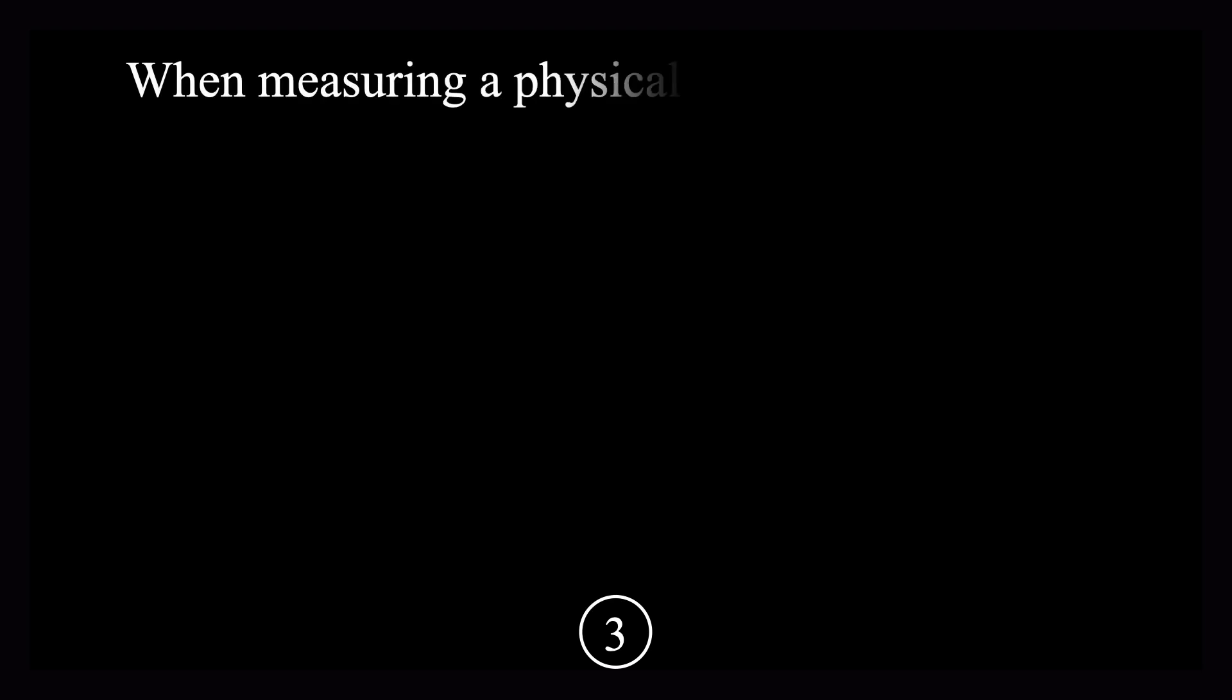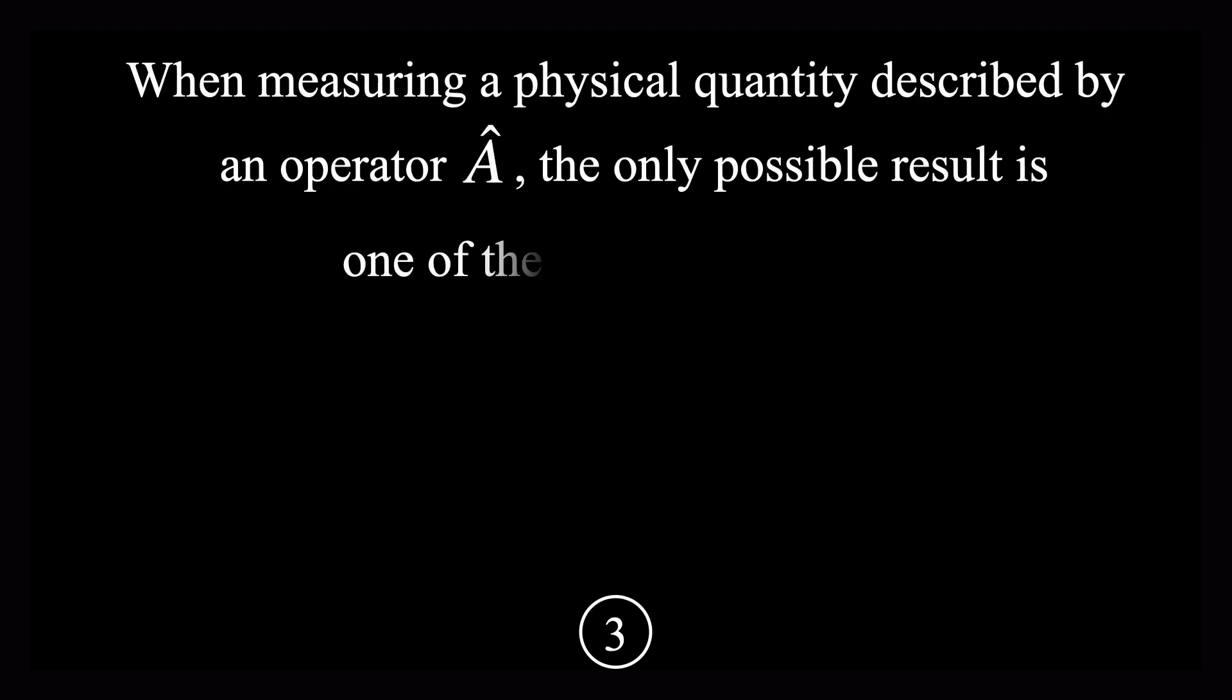Axiom 3 says that whenever we measure a physical quantity that is described by some operator, the only possible result is one of the eigenvalues of the operator. Again, here we have another linear algebra concept showing up. Things that are called eigenvalues.